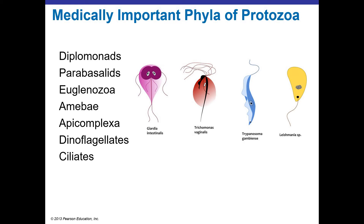We'll take a look at some of the medically important phyla of protozoa. Giardia is a GI pathogen. Trichomonas vaginalis is the STI, the sexually transmitted infection called the Tric. Trypanosoma gambense is going to be the causative agent of sleeping sickness. And Leishmania is a disease that is transmitted by a sand fly in Middle Eastern countries. This is going to be a protozoan pathogen.